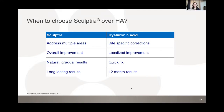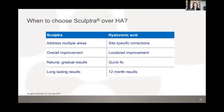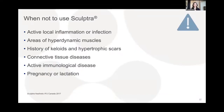Fillers may be better for site-specific or localized correction, but for long-lasting results, Sculptra is superior — 80% or more still showed improvement at 25 months, the study cutoff. Fillers last roughly 12 months on average depending on location and type. Sculptra is contraindicated for active local inflammation or infection, hyperdynamic muscle areas, history of keloid or hypertrophic scars, connective tissue disease, active immunologic disease, and pregnancy or lactation.